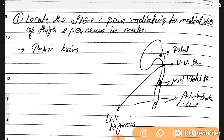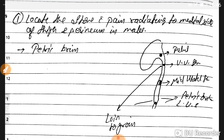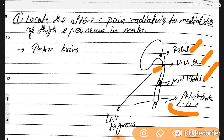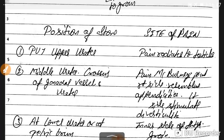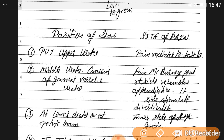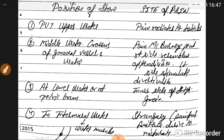Pain radiation by stone location: PUJ and upper ureter stones radiate pain to the testicles. Mid-ureteric stones cross the gonadal vessels and cause pain at McBurney's point on the right side, resembling appendicitis. Lower ureteric stones at the pelvic brim radiate pain to the groin.